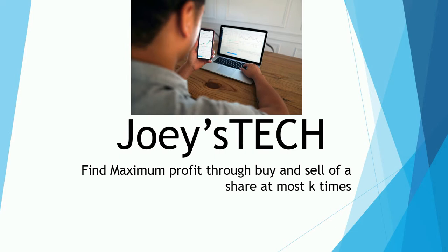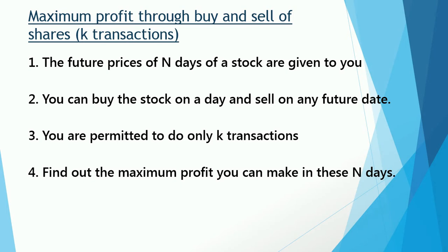The problem states that future prices of n days of a particular stock are given to you. You can buy the stock on a particular day and sell on any future date — you cannot buy and sell on the same day. There is one condition: you are permitted to do only k transactions. If k is 2, you cannot buy and sell more than two times.